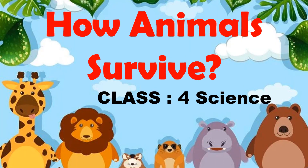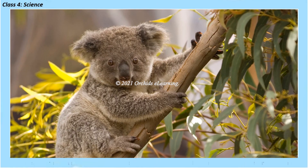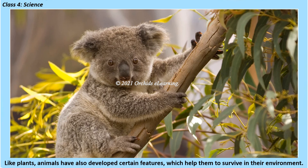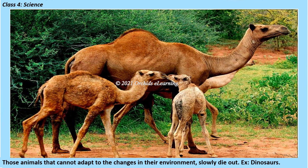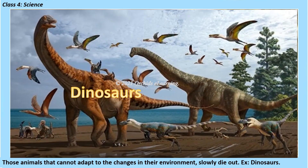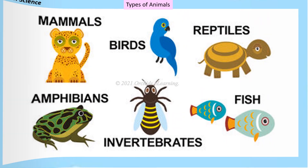How animals survive — for science, like plants, animals have also developed certain features which help them to survive in their environment. Those animals that cannot adapt to the changes in their environment slowly die out. Example: dinosaurs.